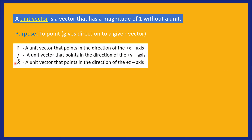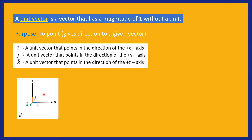i-hat, j-hat, and k-hat are unit vectors. i-hat is a unit vector that points in the direction of the positive x-axis, j-hat points in the direction of the positive y-axis, and k-hat is a unit vector that points in the direction of the positive z-axis. In a diagram, we have x, y, and z: i-hat is to the right so minus i-hat is to the left; j-hat is upward and minus j-hat is downward; k-hat is outward while minus k-hat is inward.